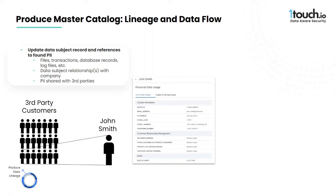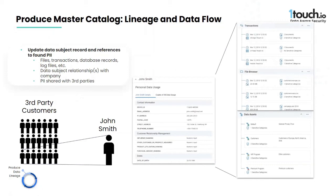This data can be investigated from different starting points depending on the specific use case requirement. For example, take the privacy use case of collecting data for data subject access request responses. Starting with a unique identifier for John Smith, such as an ID or an email address, we can see all the transactions, files, databases, repositories, and other data assets John's data is associated with. This allows the privacy user to identify where all the copies and partial copies of John Smith's data reside and with whom it has been shared.